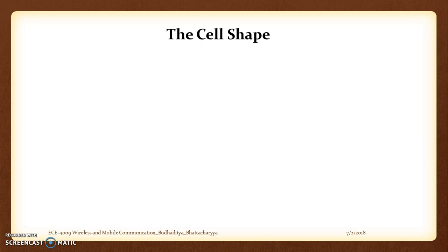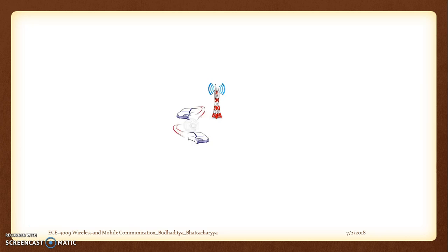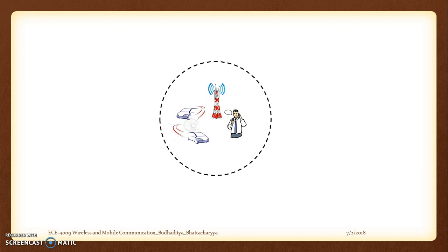The important topic of discussion today is what we call cell shape. So what we have is a base station. Now we have users who might be in a vehicle with very high velocity, and there might also be some stationary people around it who are communicating. This whole segment can be approximated as a region where this particular base station has an omnidirectional pattern of radiation. Hence we can assume it to be circular in nature, and this whole coverage region is what the cellular coverage is all about.